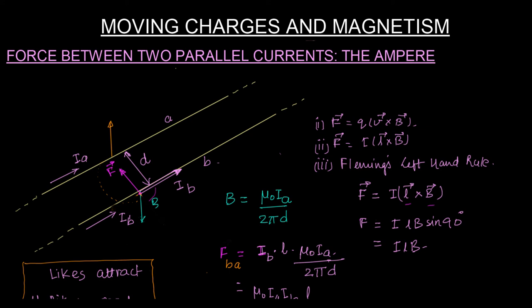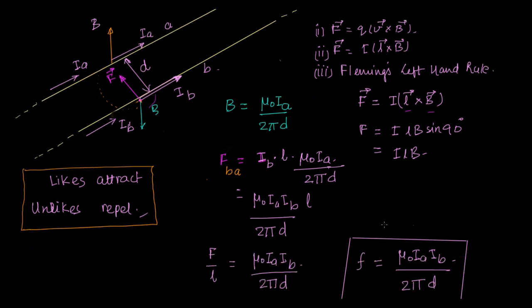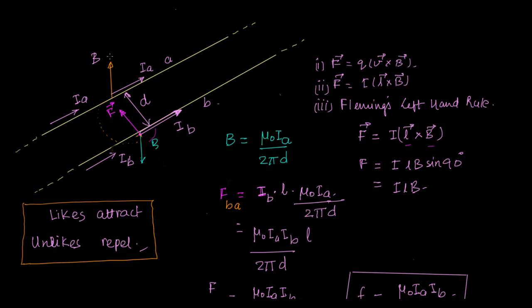So field will be something like that. And we already have the current in this direction. So the current is like that. This is IA and this is B. And what is this B equal to? It's again mu0 I upon 2 pi D but this time the source current is IB not IA.